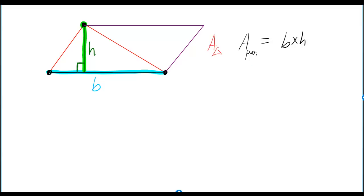But the area of the triangle is only one half of the area of the parallelogram, so it's half of the base times the height. It's half because it's one out of the two triangles that were used to make up the parallelogram.